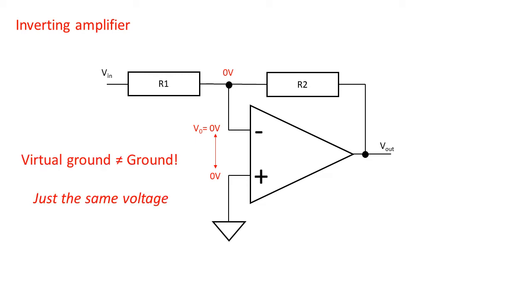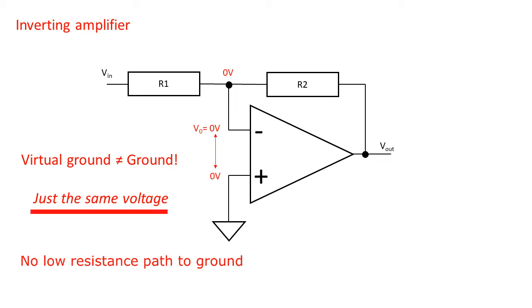This is a virtual ground and not a real ground because the voltage is equal to ground but there is no physical lower distance path to ground. The virtual ground is not a return path of current, it's just another voltage in the circuit which happens to be zero volts.